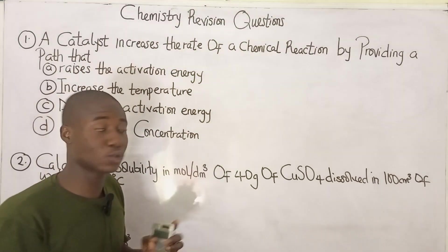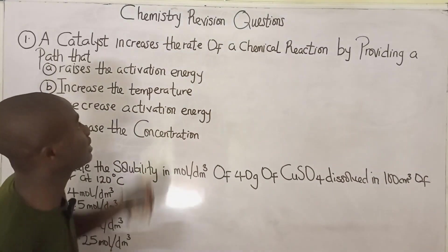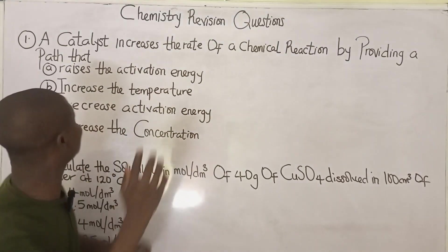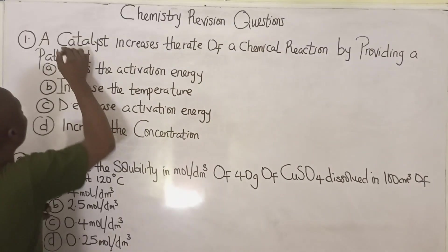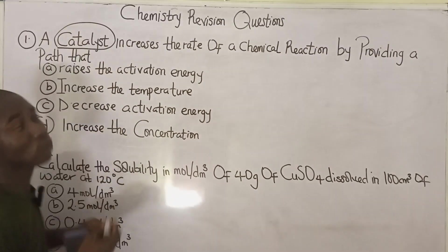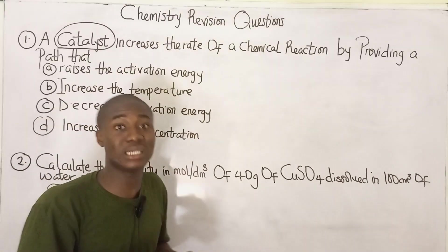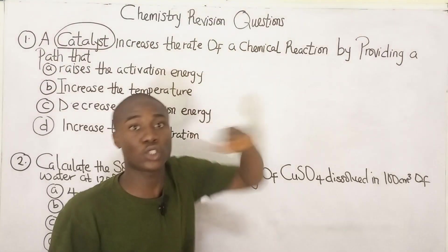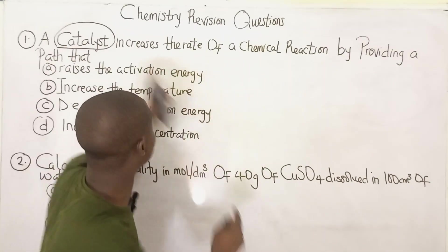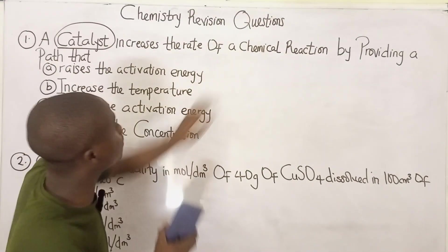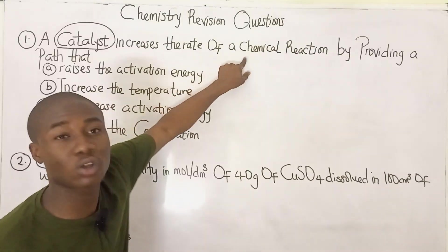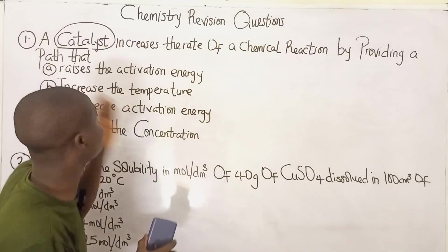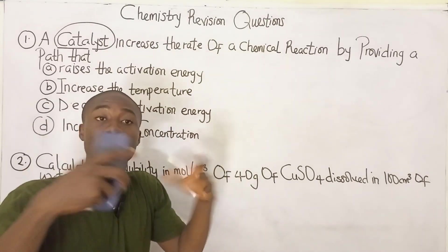Let's get into the first question, which says: a catalyst increases the rate of a chemical reaction by providing a path. First, we have to know what the catalyst is all about. A catalyst increases the rate of a chemical reaction. Note that if this were biological rather than chemical, the word 'catalyst' would change to 'enzymes'.